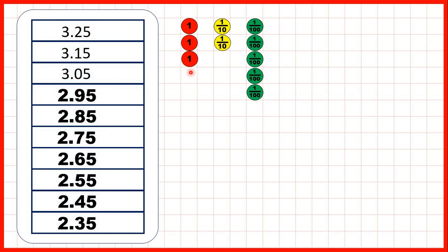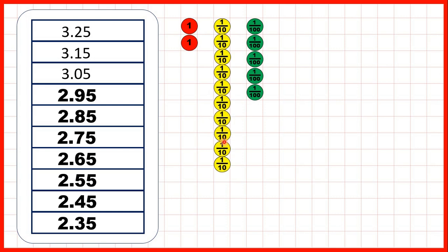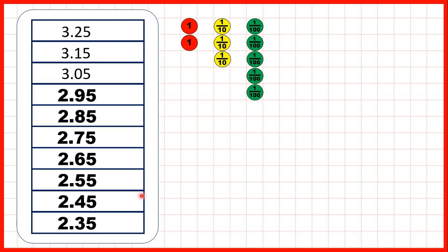But again, we can use place value counters to see what's happening. 3.25 is three wholes, two-tenths, and five-hundredths, and this time we're counting back in tenths, so the five-hundredths is going to stay the same. When we've taken away two-tenths, we get to 3.05, or three wholes and five-hundredths. But then, to take away tenths, we need to exchange one of our wholes for ten-tenths. Then we can keep on subtracting tenths, or counting back, until we get to 2.35, or two wholes, three-tenths, and five-hundredths.